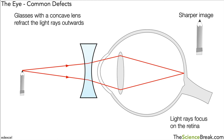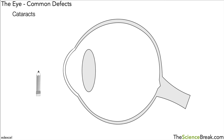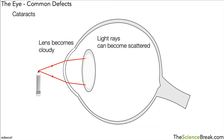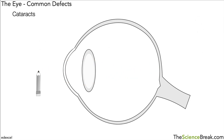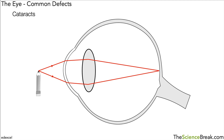Another issue that can happen is called cataracts — the formation of cataracts. This is when the lens goes cloudy because a protein forms on it, and that will impair vision. Light rays come off the object but when they meet the lens they are slightly scattered. This causes a problem with the image — it will end up being either blurry or faint, and people with cataracts sometimes can't see very well in high light intensity. The only way to fix this is to replace the lens with an artificial one, and vision can be returned to normal.